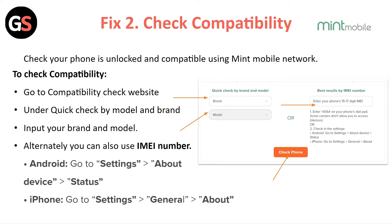Fix 2: Check compatibility. Check that your phone is unlocked and compatible with the Mint Mobile network. To check compatibility, go to the compatibility check website. Under quick check by model and brand, input your brand and model. Alternatively, you can also use your IMEI number.